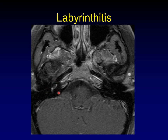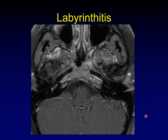Labyrinthitis can be infectious, post-traumatic, or autoimmune inflammatory. Any of the forms of labyrinthitis — even labyrinthitis ossificans — can look enough like perineural spread. When perineural spread gets into the cochlea, it doesn't just go right up the center; it also spreads out into other aspects of the cochlea. So this enhancement along the spiral of the cochlea could absolutely be seen in perineural spread and is of course a classic appearance for labyrinthitis.